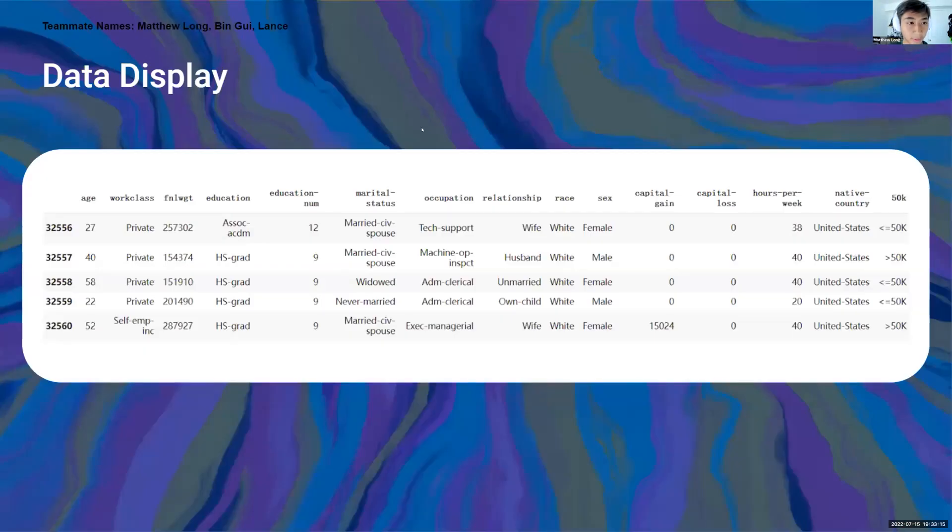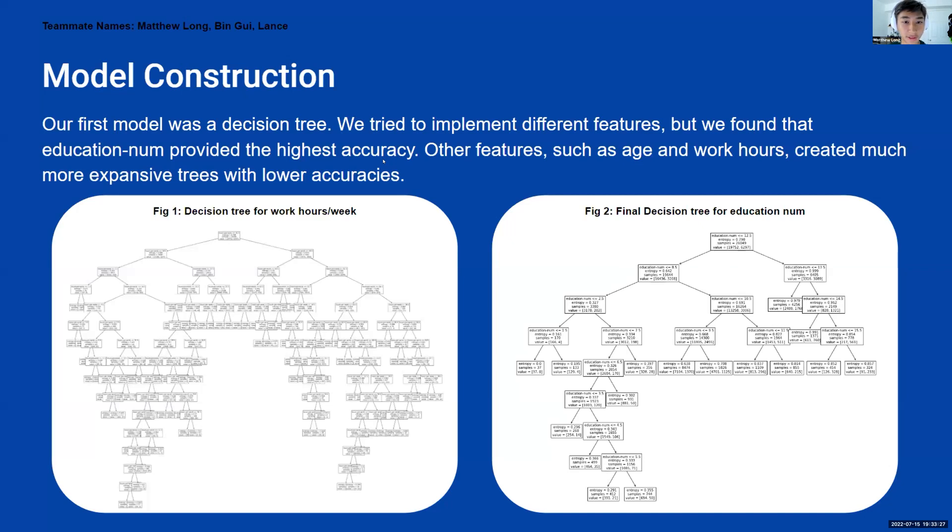Here's just the display for our data. As you can see, it has the different attributes, and this is before we one-hot encoded the 50k and dropped some of the unnecessary values. So our first model was a decision tree. We tried to implement different features, but we found that education number, which are like numbers of years in education, provided the highest accuracy.